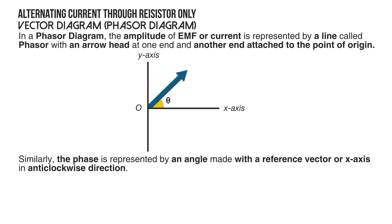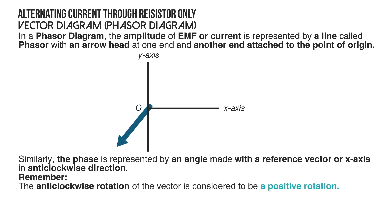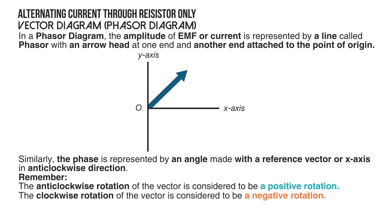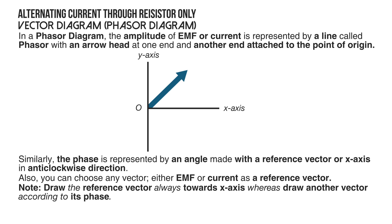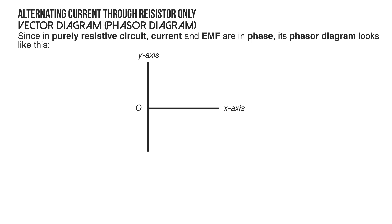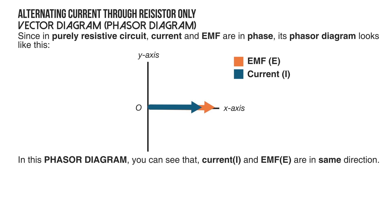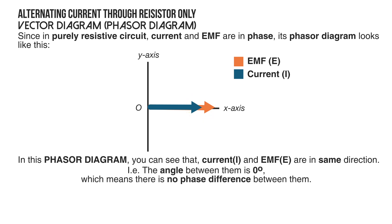The phase is represented by the angle made with a reference vector or x-axis in the anti-clockwise direction. Anti-clockwise rotation is considered positive; clockwise rotation is negative. You can choose either emf or current as the reference vector. In this tutorial, I will choose current as my reference vector, drawn along the x-axis. Since in a purely resistive circuit current and emf are in phase, the phasor diagram shows both vectors in the same direction — the angle between them is zero degrees, meaning no phase difference.